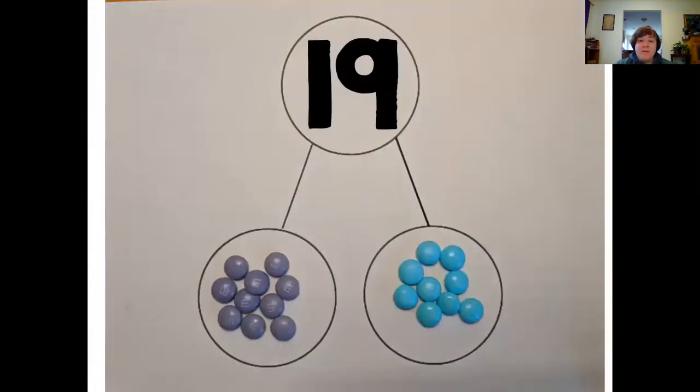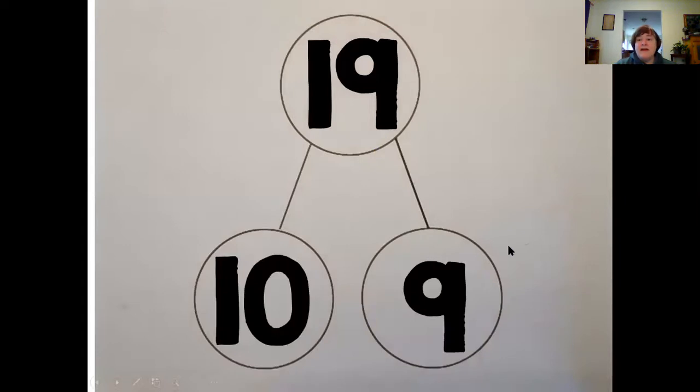I can switch my number bond around. I've got the 10 and the nine down here. And I can now put all my numbers together. 10, nine is the same as 19.